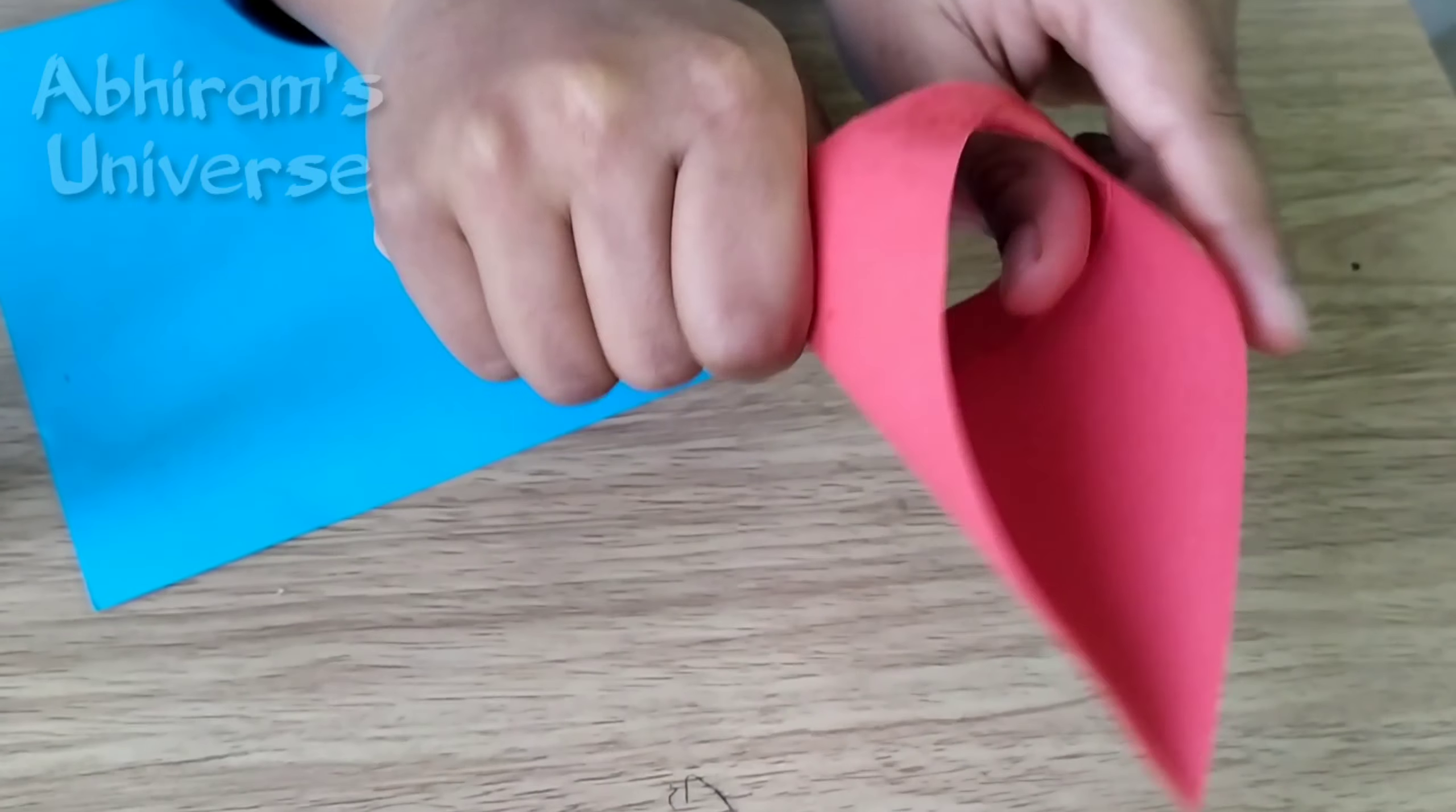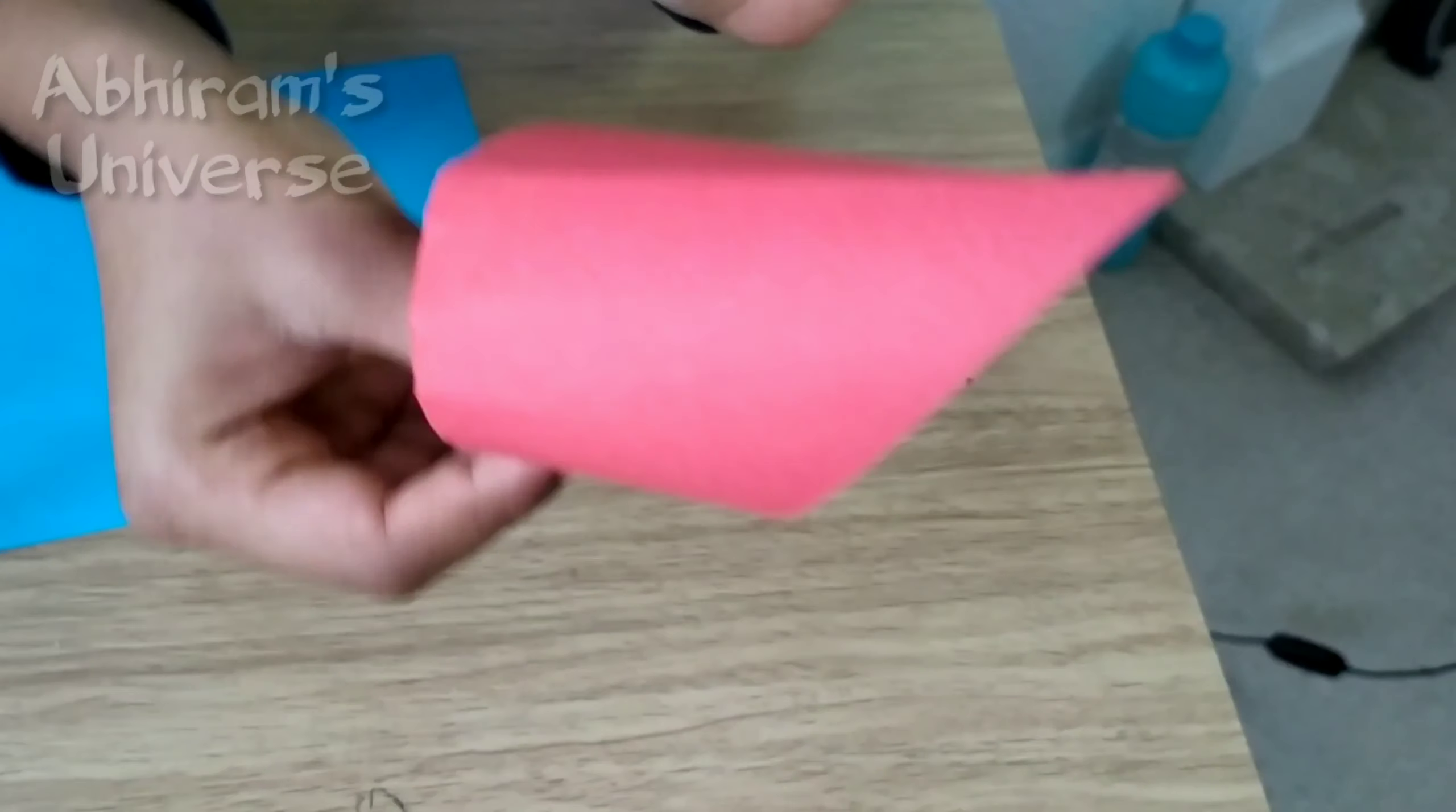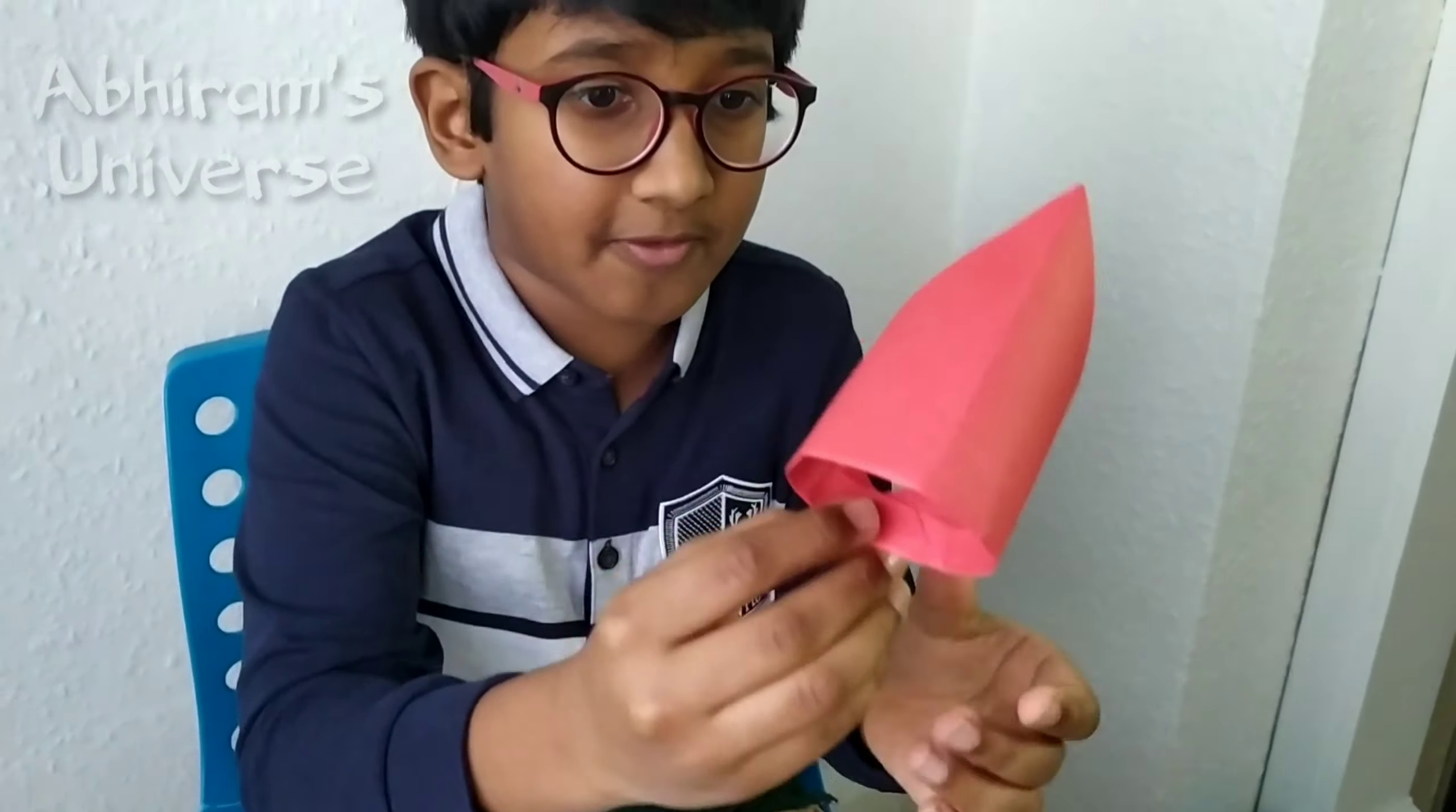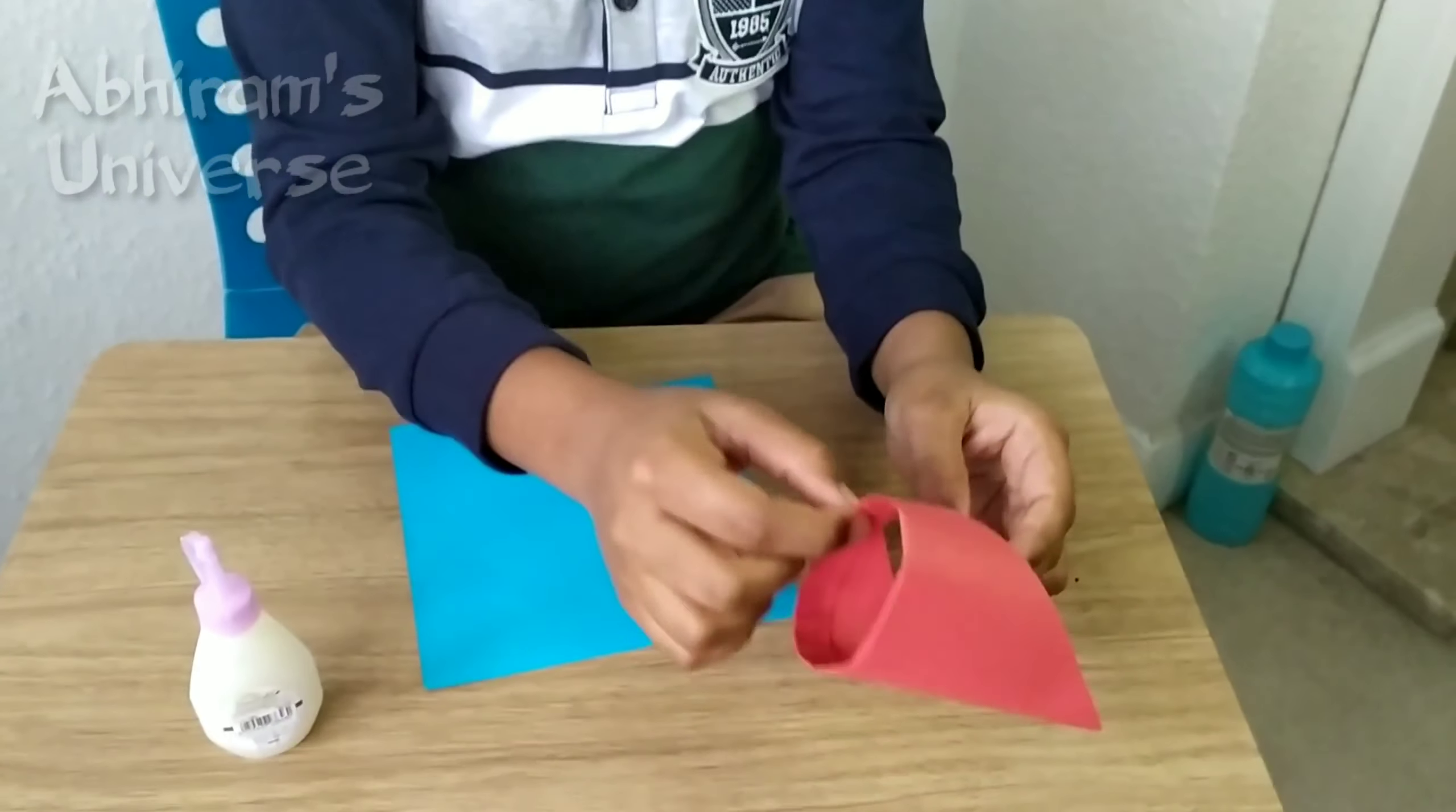So then when you put the thingy on here, the flight thingy, then it could fly better. It could fly with a nice grip and if it breaks then it won't fly that good. So you have to clip it really strong.